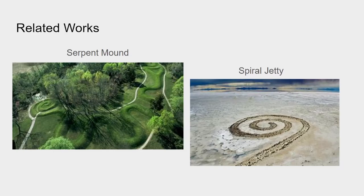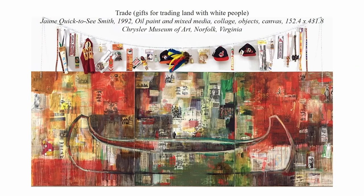Related works: the Spiral Jetty and the Serpent Mound are related to this work because they are both installations and they cannot be moved from their location. This is Trade, Gifts for Trading Land with White People. It was made by Jean Quick-to-See Smith in 1992 using oil paint and mixed media collage objects and canvas. It is a very large work with dimensions of 152.4 inches by 431.8 inches. Trade is currently located in the Chrysler Museum of Art in Norfolk, Virginia.